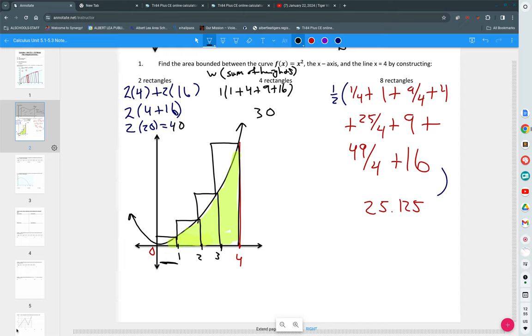The more rectangles we have, the more accurate our estimation is going to be. Agreed? Everybody okay with the picture? So, you're going to have three tasks on your assignment. You're going to first find area by drawing rectangles given a function.